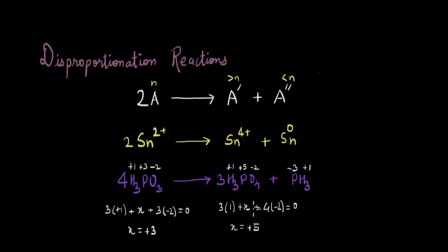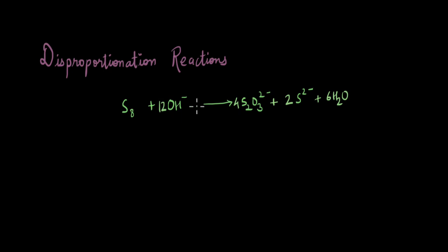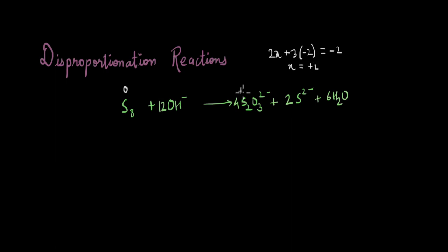Disproportionation reactions are mostly observed where a species shows variable oxidation states. Sulfur is another such element. In its free state, sulfur has oxidation number 0. For the sulfur species with charge −2: 2x + 3(−2) = −2, giving x = +2. And for the species with charge 2−, sulfur is −2. So sulfur goes from 0 to +2 and from 0 to −2, making this a disproportionation reaction.